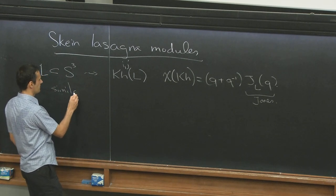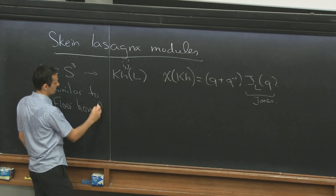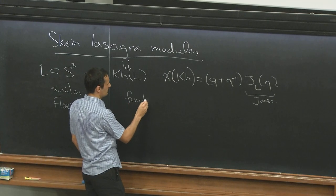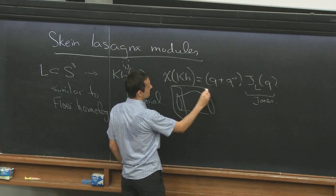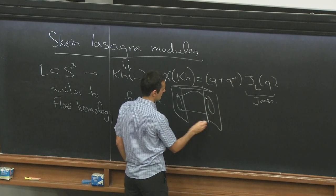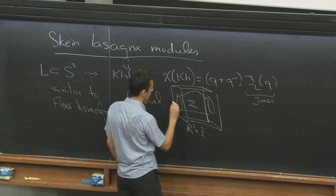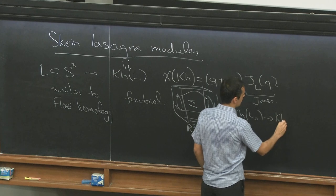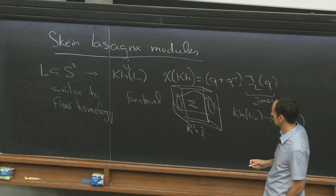It's very similar to Floer homology in many ways. So it's functorial under cobordisms. I have some surface in R3 times I between two links. Then I get a map between the Khovanov homologies. There's some ambiguity in signs, but it can be fixed.